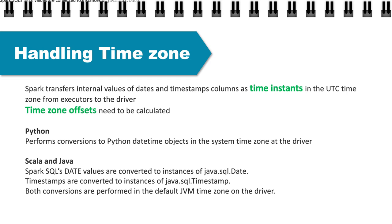When the data is being transferred from the executor to the driver and read, if we are using PySpark, there is a conversion using the Python datetime object to the system time zone — whatever the local time zone of the driver is, that will become the time zone and the time will be converted accordingly. If we are using Scala or Java, wherever the driver is running, the local time zone of the JVM will be used and the time will be converted accordingly. That is the default behavior, but when we create a date there are ways in which we can specify the time zone and what we want to convert it into.